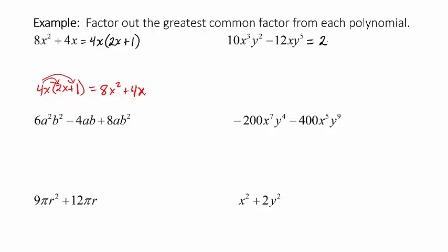Now look at the variables. We have x's in both terms: x cubed in the first and x in the second. Since the second term only has x to the first power, we include only x in the GCF. For y, we have y squared in the first term and y to the fifth in the second, so y squared is common to both and goes into the GCF. So the GCF is 2xy².